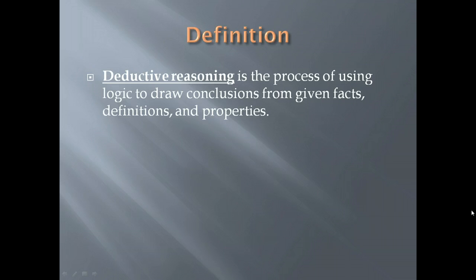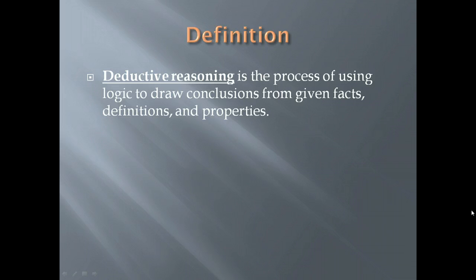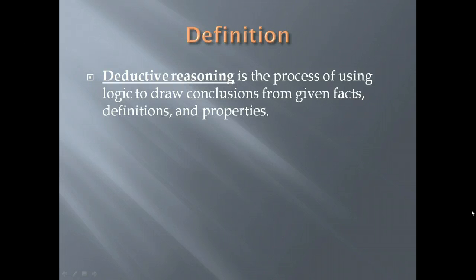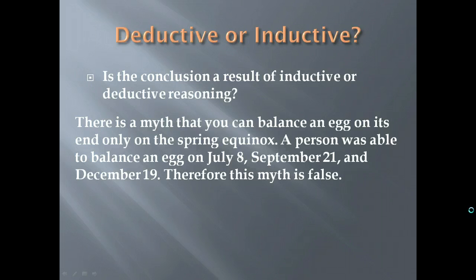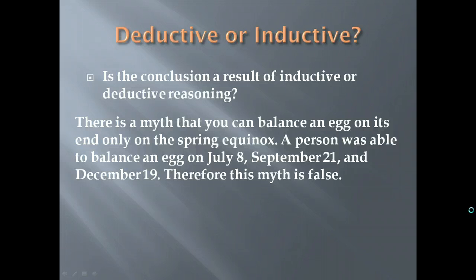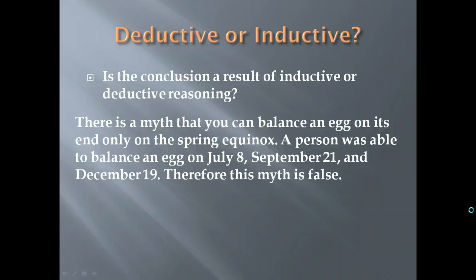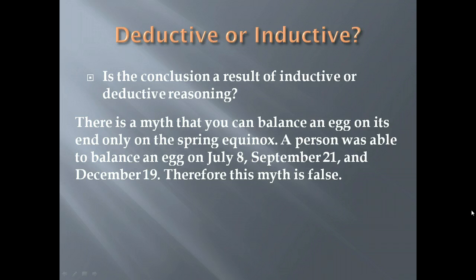Up until now we've been talking about inductive reasoning, where we start with a small picture and include more examples to come to a conclusion. Deductive reasoning is the process of using logic to draw conclusions from given facts, definitions, and properties. For example, there is a myth that you can balance an egg on its end only on the spring equinox. A person was able to balance an egg on July 8th, September 21st, and December 19th — therefore this myth is false. Since we're including more examples, this is inductive reasoning.